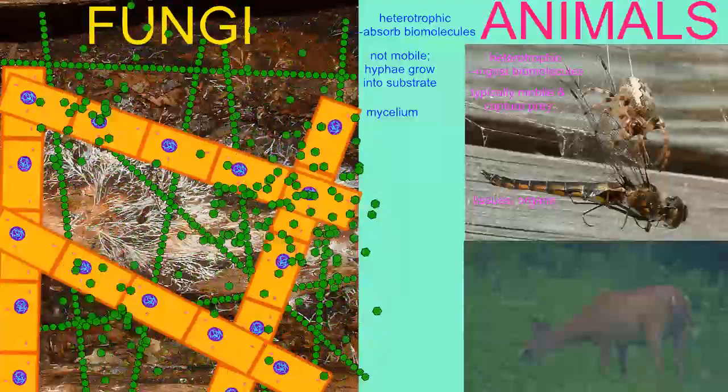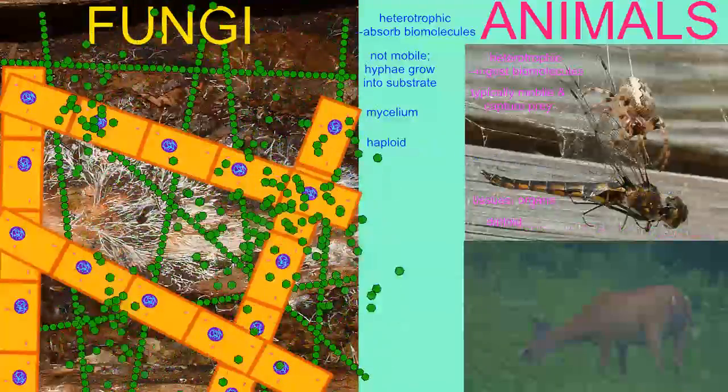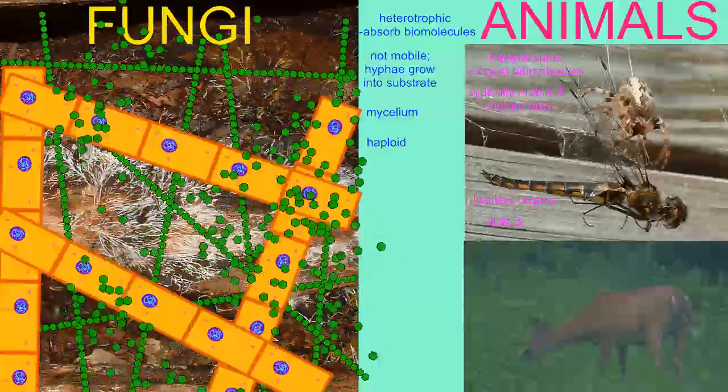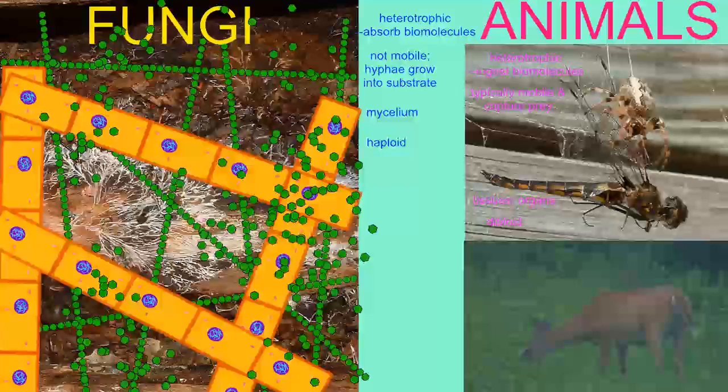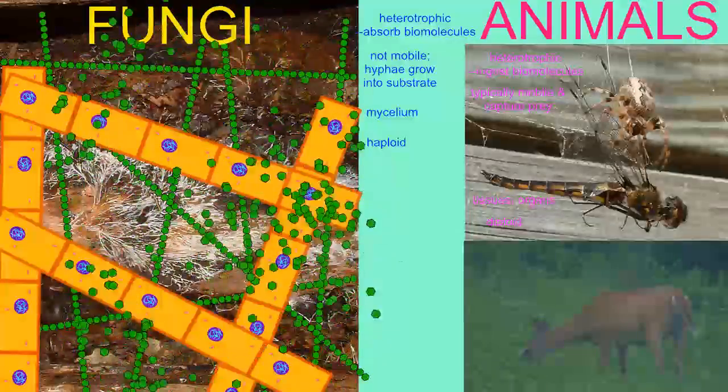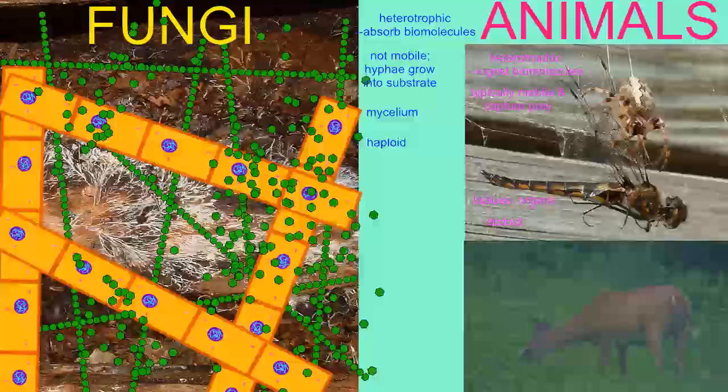Most of an animal's body is diploid. Its only haploid cells are sex cells. In comparison, most fungal cells are haploid and diploid cells exist only briefly during reproduction.